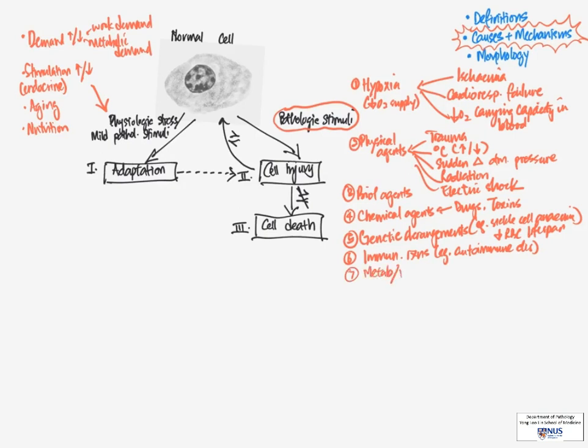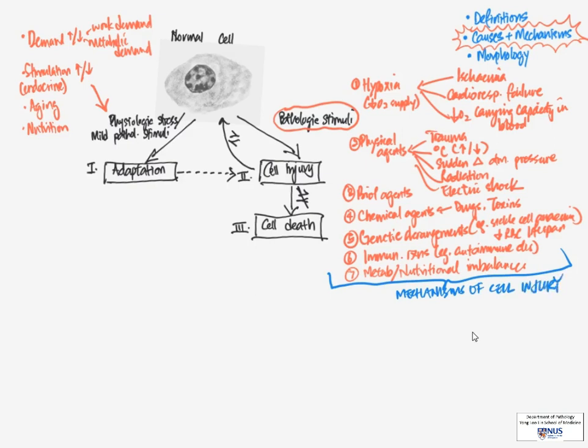Lastly, metabolic and nutritional imbalance can also give rise to cell injury and ultimately cell death. Now, knowing all the causes, what are some of the actual mechanisms of cell injury? It is a very complex process, and we could break it down by looking at several main areas.